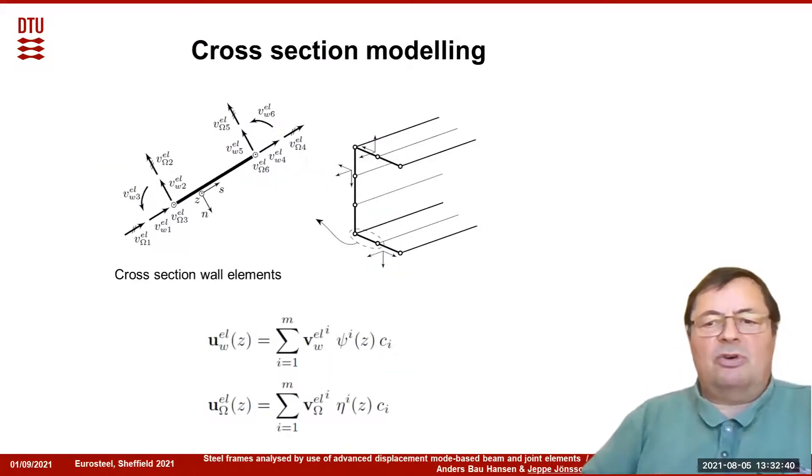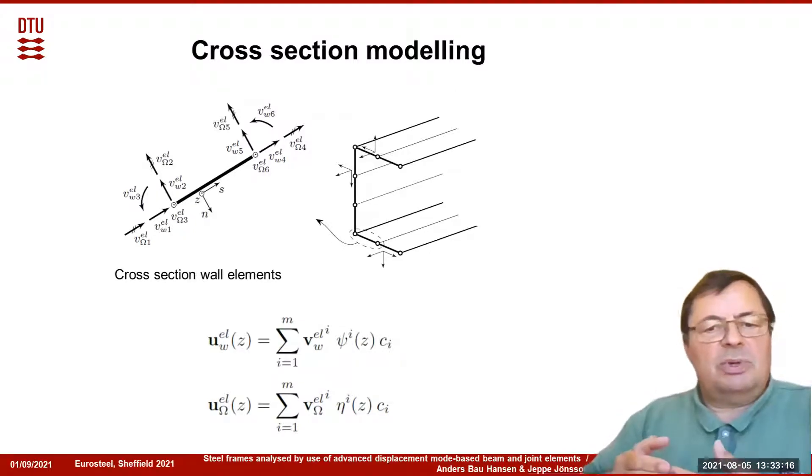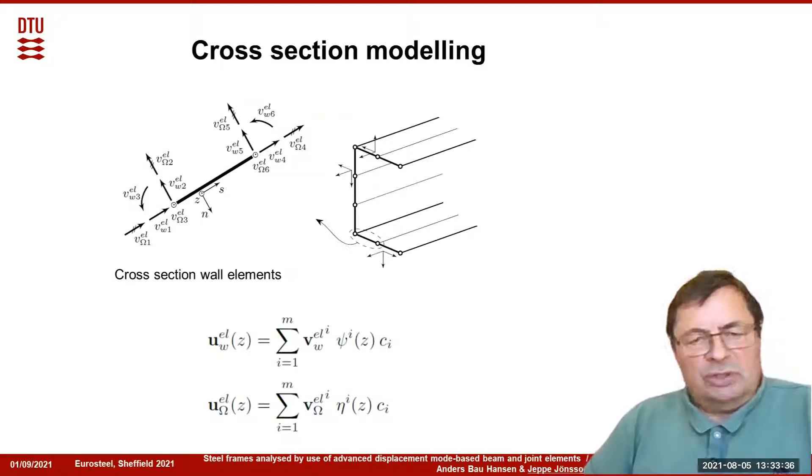The cross section modeling is performed by discretizing the cross section into wall elements. The cross section wall elements are like a beam element except that they have six degrees of freedom at each end corresponding to a space node. These describe what happens with the cross section. Between the nodes, we have an interpolation of displacements. The nodal functions are multiplied by the axial variation functions, the phi functions, and they can be added up with different constants, which are the amplitudes of each mode.